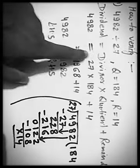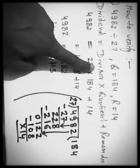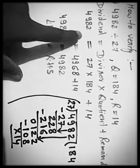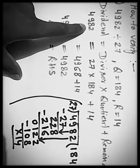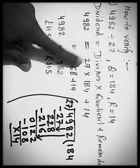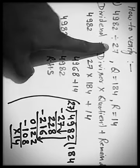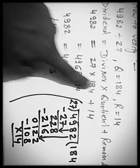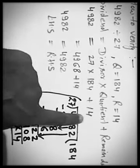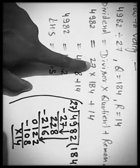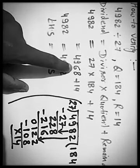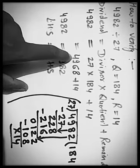Now, how to verify your answer? Formula of dividend equals to divisor multiplied by quotient plus remainder. 4,982 is dividend. Now 27 as divisor. 184 is quotient plus 14 as remainder. When we apply 27 into 184, then we will get 4968.